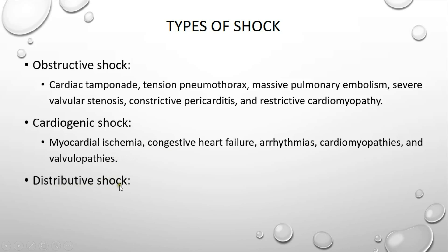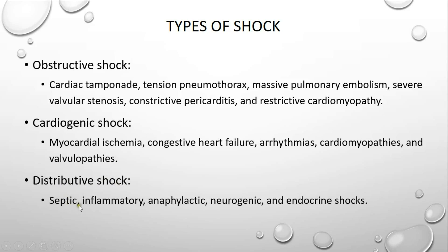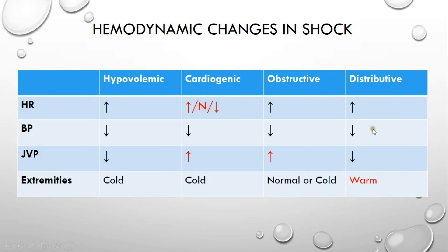Distributive shock involves systemic vasodilation resulting in warm extremities. It is seen in septic shock, inflammatory shock as in pancreatitis and burns, anaphylactic shock, neurogenic shock, and endocrine shock as seen in adrenal crisis and myxedema coma. This concludes the quick description of the four main types of shock.